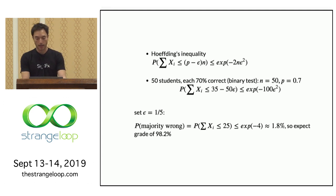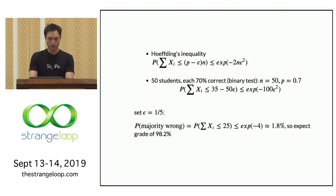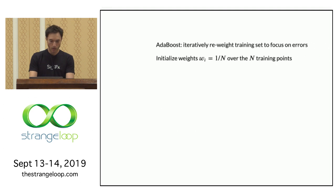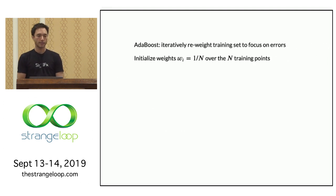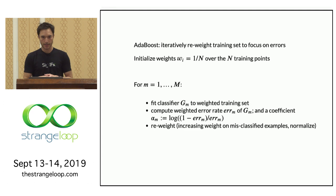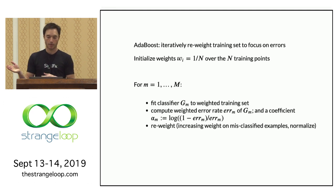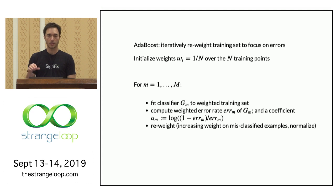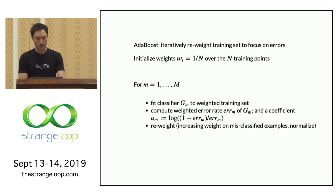In the AdaBoost framework, the idea is to reweight the training set based on the errors accumulated so far. You first weight the training set with every point receiving an equal weight. Then for some number of iterations, you fit a classifier — for example a decision tree — to that training set. From that you compute its weighted error rate, extract a coefficient, and then reweight the training set to encourage the next classifier to focus more on the examples gotten wrong so far.